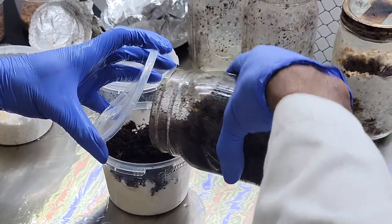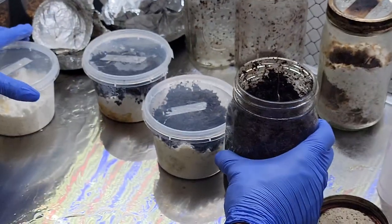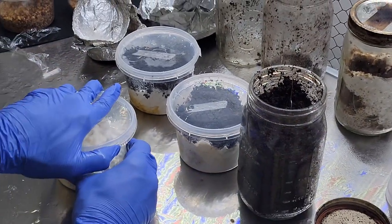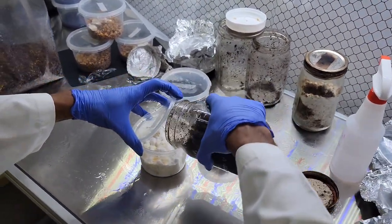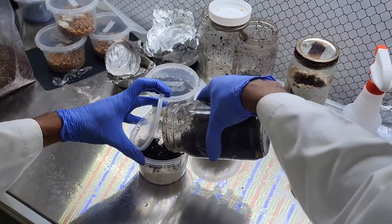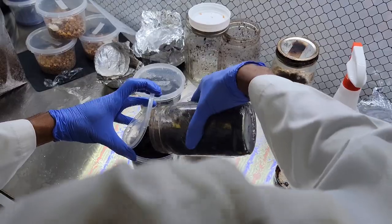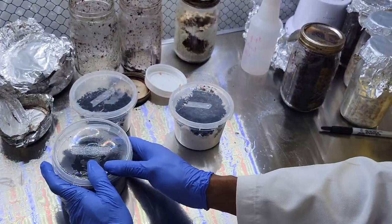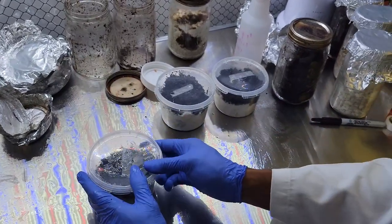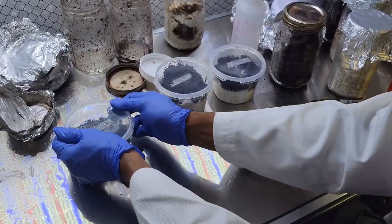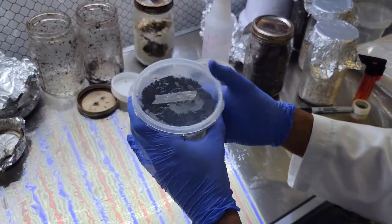If we just put this out to fruit like this, it'll probably contaminate really fast. But coco coir is naturally antifungal and it will prevent anything from contaminating the nutrient underneath. The mycelium will colonize the coco coir and then they will just use the nutrient underneath to fruit on top of the coco coir.